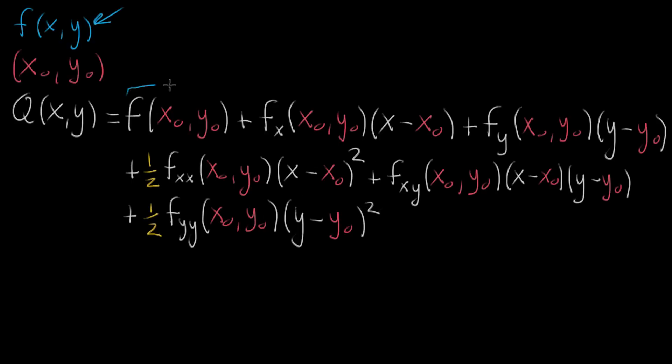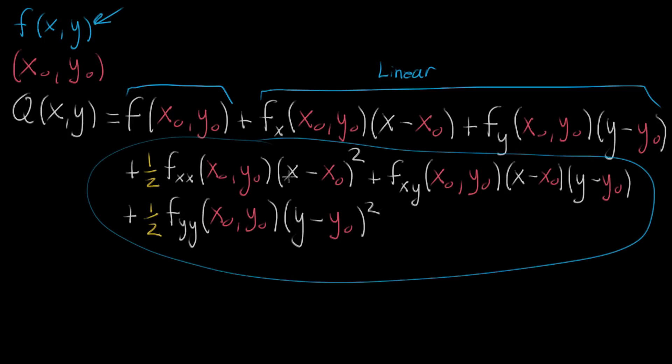Just dissecting it real quick, this over here is the constant term, this is just going to evaluate to a constant. Everything over here is the linear term because it just involves taking a variable multiplied by a constant, and then the remainder, every one of these components will have two variables multiplied into it, so x squared comes up, x times y, and y squared comes up, so that's the quadratic term.